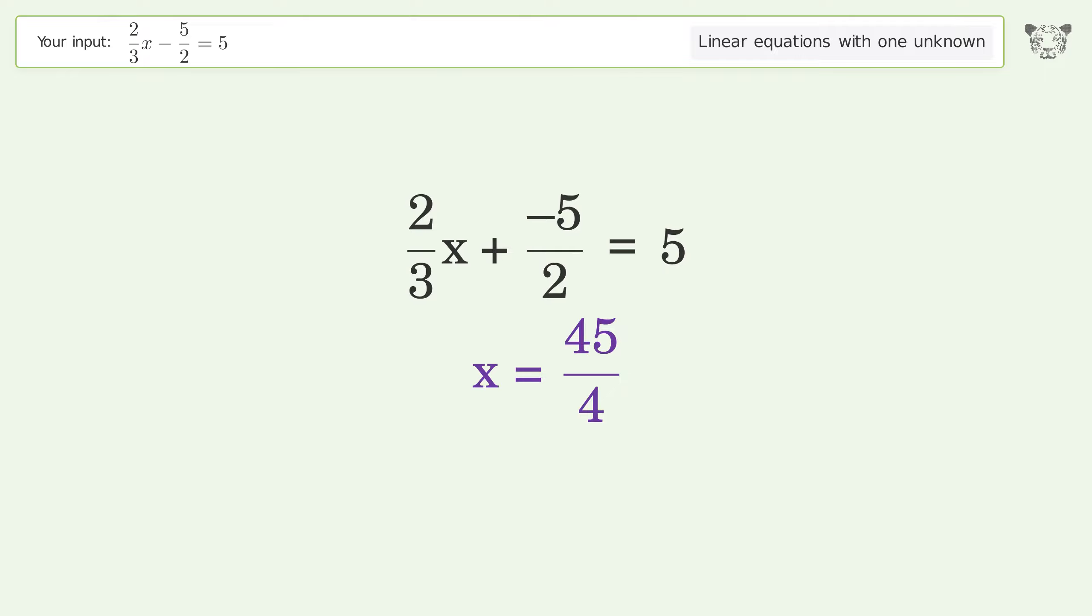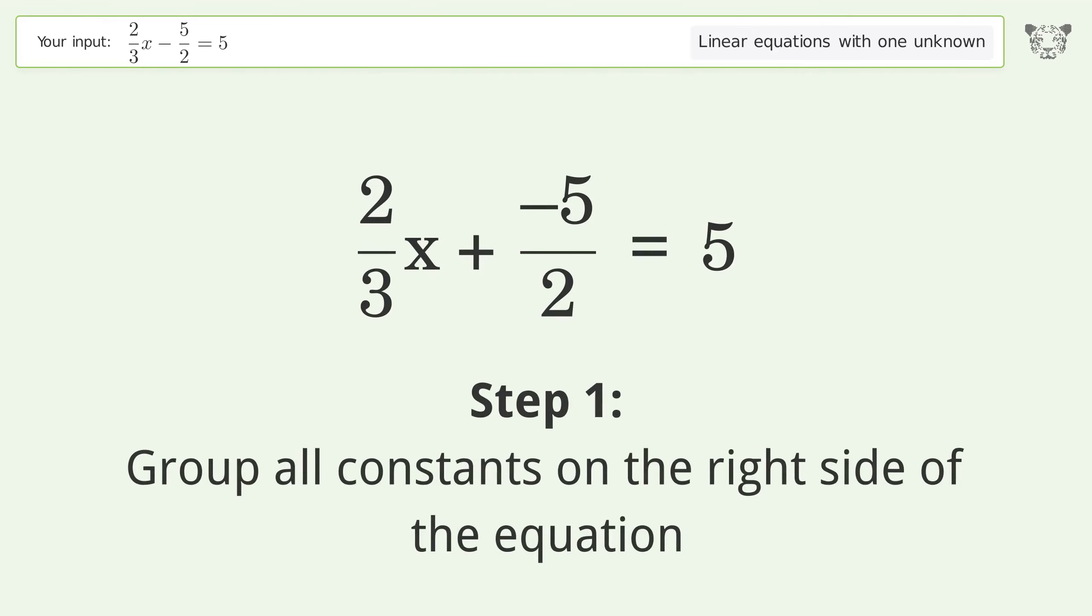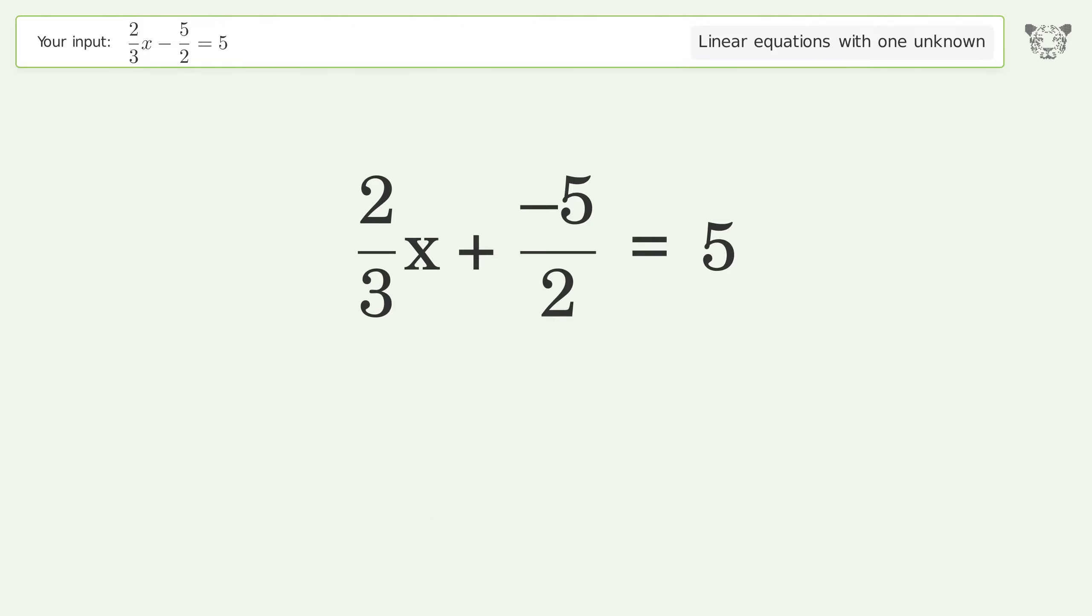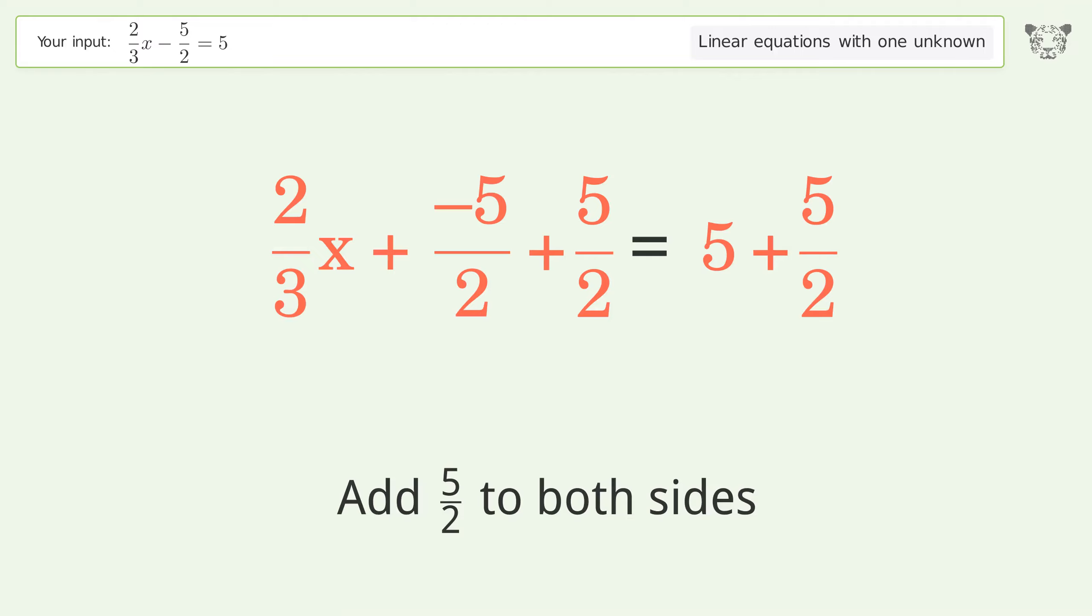Let's solve it step by step. Group all constants on the right side of the equation. Add 5 over 2 to both sides and combine the fractions.